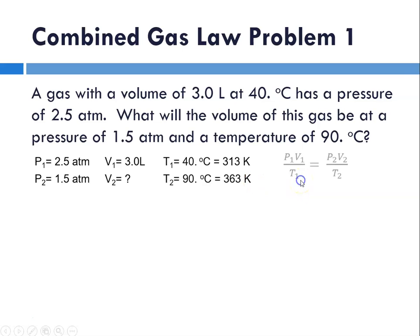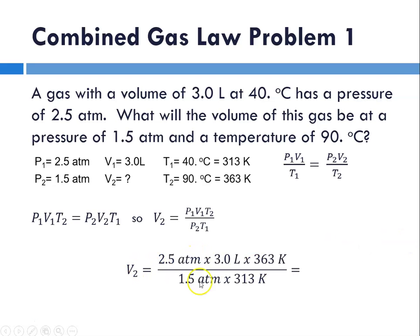So now we have our variables, and this is our equation. So we're going to have to rearrange this equation to solve for V2. So P1 V1 T2 equals P2 V2 T1. Therefore, V2 is P1 V1 T2 divided by P2 T1. So V2 now is going to be 2.5 atmospheres times 3 liters times 363 Kelvin, divided by 1.5 atmospheres and 313 Kelvin.